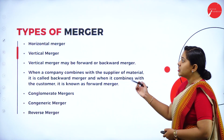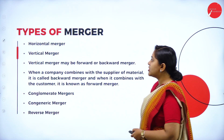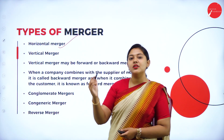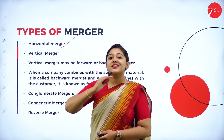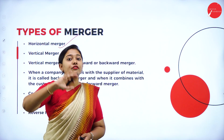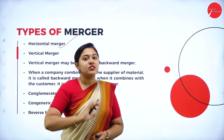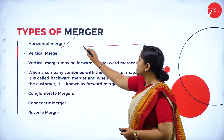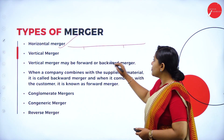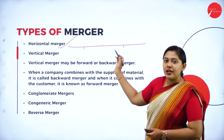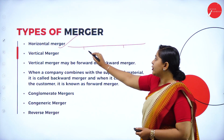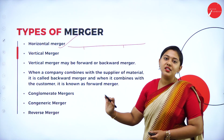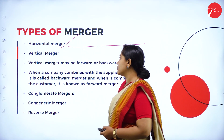Types of merger: first is horizontal merger, which is a merger where companies with similar business activities merge together. For example, if an FMCG company merges with another FMCG company, then it is called a horizontal merger — same business line.